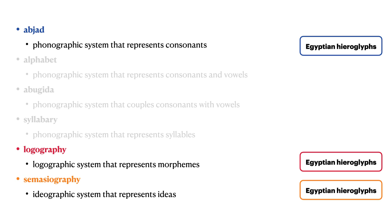Let's look at the types of writing systems, beginning with some mixed writing systems that apply more than one principle. Ancient Egyptian hieroglyphs, the ancient Egyptian writing system, uses the phonographic principle. Many Egyptian hieroglyphs are phonographic symbols representing consonants, or potentially groups of consonants.